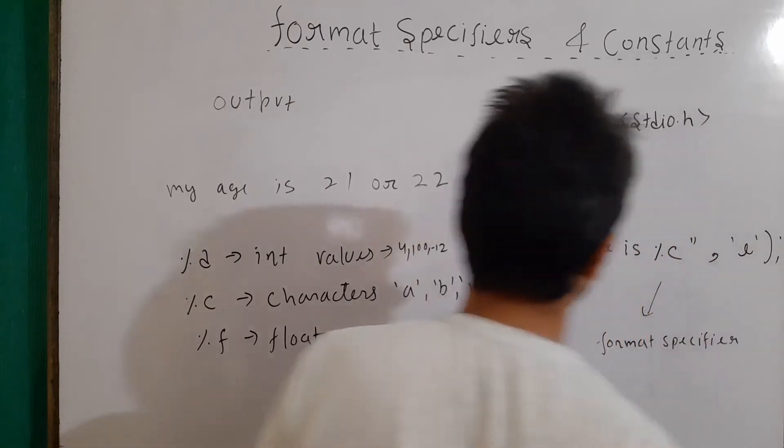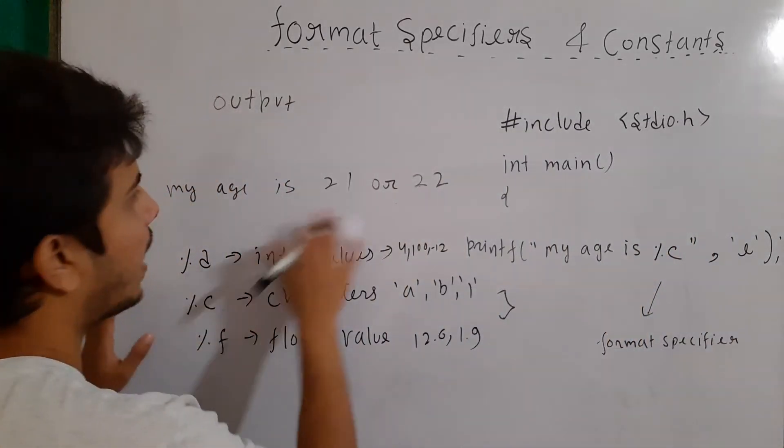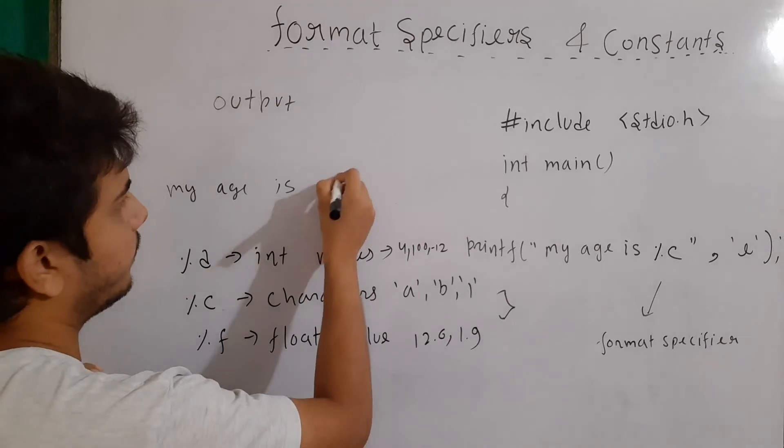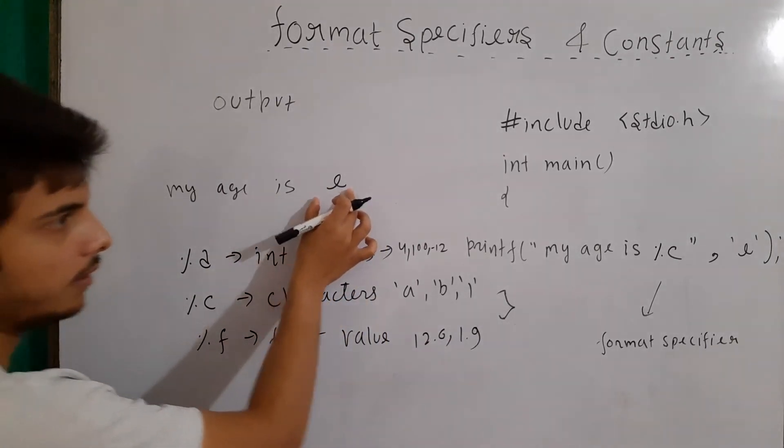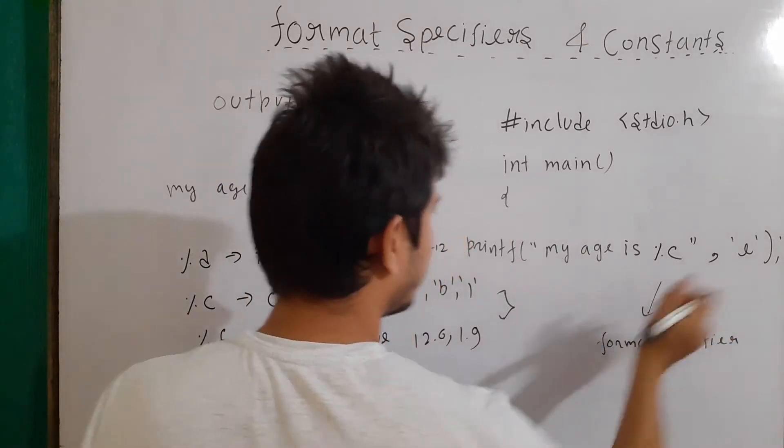Now our output will be my age is E. Note that no quotes are coming here. But here we have to write the quote.